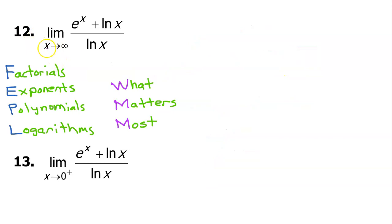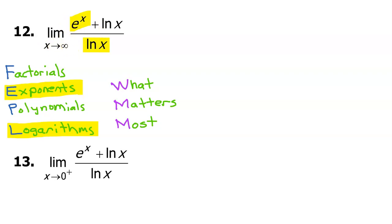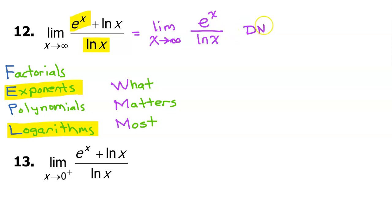In problem number 12, x is approaching infinity, so we can use FEPL and what matters most. Looking at the numerator, we see an exponential term and a logarithmic term. According to FEPL, exponential terms grow faster than logarithmic terms, so the exponential term matters most. In the denominator we only have the logarithmic term, so this limit will equal the limit as x approaches infinity of e to the x over natural log x. From here, we can see that the limit simply does not exist.